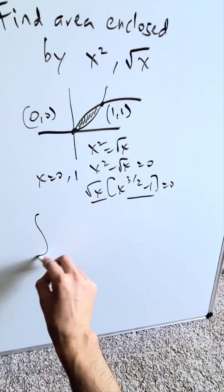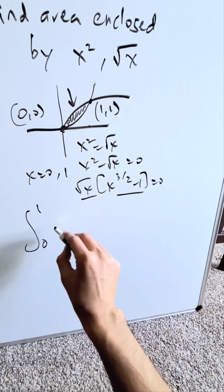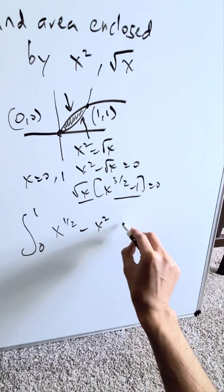Now we have everything for the integral from 0 to 1. I have an upper curve which is x^(1/2), which is √x, and a lower curve which is x². Integrate this.